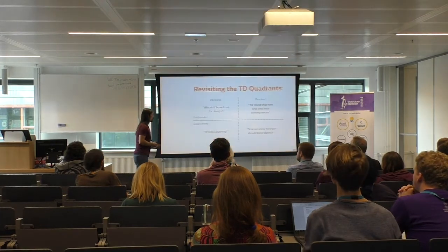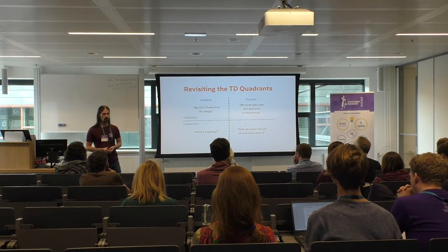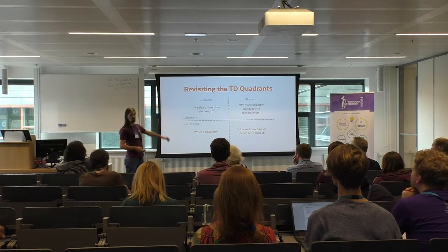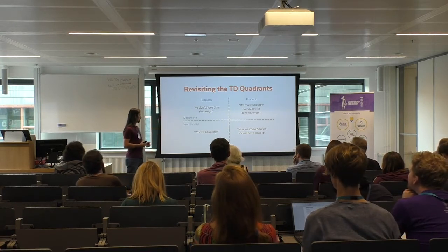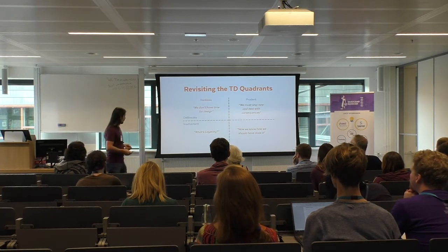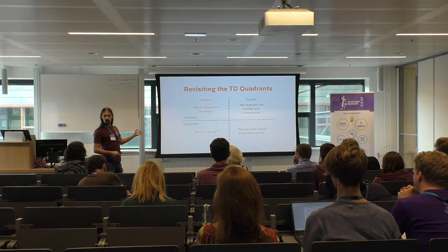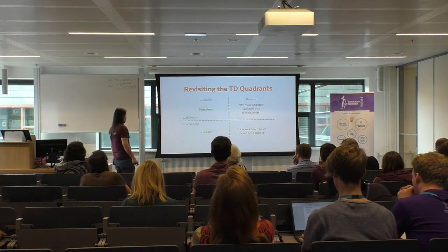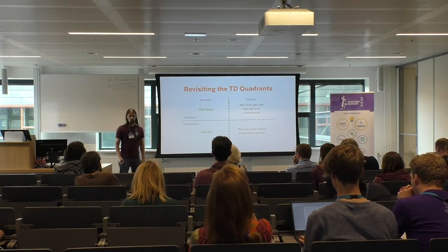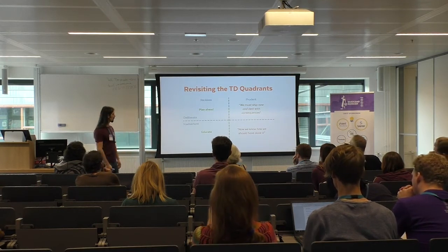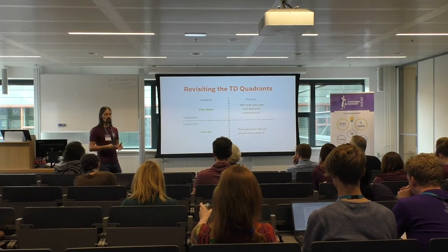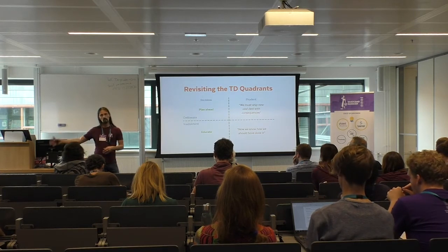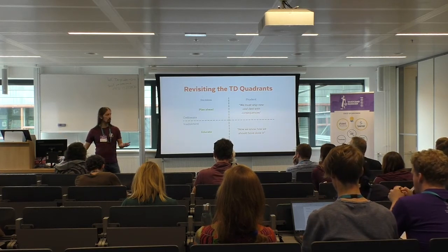How can we improve this? Revisiting the technical debt quadrants — the reckless side is something that should not happen. To solve it, you can plan more, design more, and educate people. Technical debt created because you don't know any better can be solved by educating people, explaining best practices, or looking outside the WordPress bubble to see how others have solved these problems years before. At the WordPress scale, this is quite an interesting challenge in and of itself.